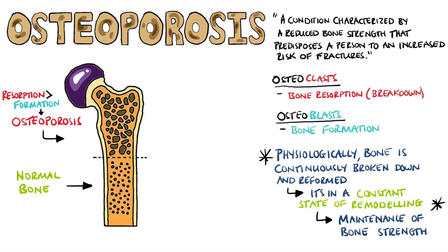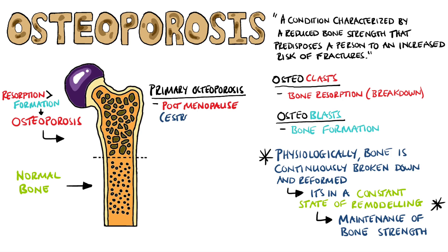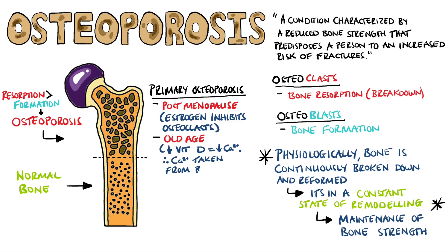You can have primary osteoporosis, which happens post-menopause, as estrogen levels decrease and osteoclast activity increases because estrogen acts to inhibit osteoclasts. Or, you can have primary osteoporosis as a result of old age, where you have less vitamin D activity, meaning less calcium being absorbed from the gut, and so the body starts taking calcium from the bones instead.